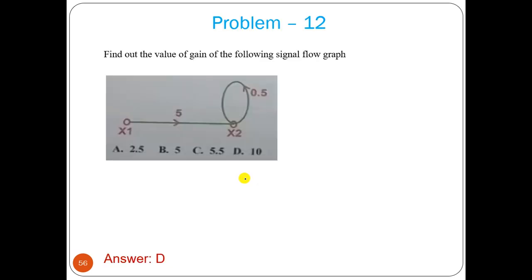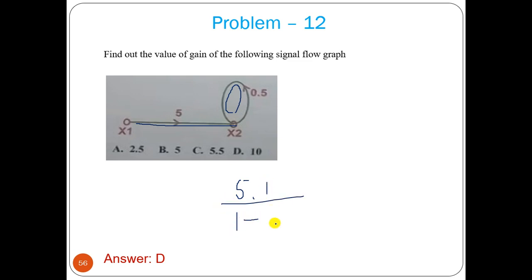Last problem: one forward path with gain 5, one self-loop with gain 0.5. Delta = 1 − 0.5 = 0.5 = 5/10. Delta1 = 1. Transfer function = 5 / 0.5 = 10. So the gain value is 10.